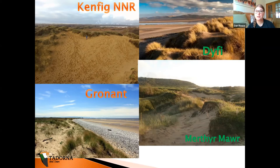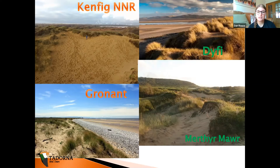Merthyr Mawr is directly opposite Kenfig — Kenfig's on the coast and Merthyr Mawr is behind it. It's different in that we get pied flycatchers there during autumn and spring. There are also nightjars and we get a lot of buntings — hundreds of linnets, goldfinches, and reed buntings use it as well. So whilst these dunes look very similar and the term 'dune' applies to all four of them, because of the change in their habitat and location, the birds that use them vary completely.